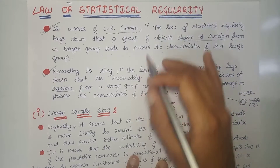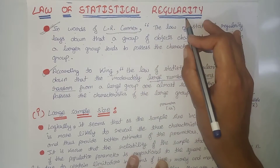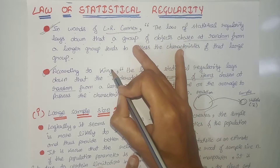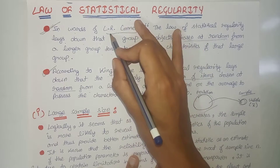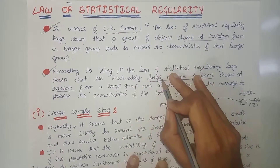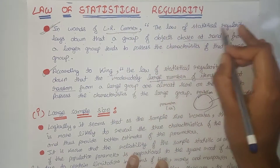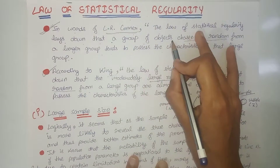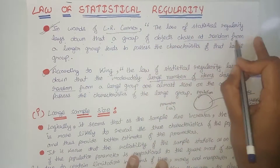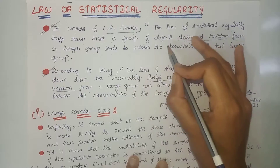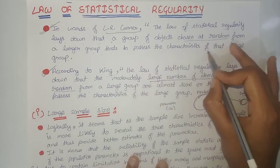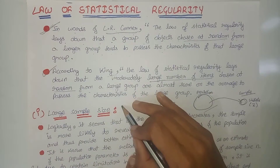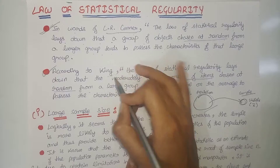In this video we are going to study the Law of Statistical Regularity. Firstly, we will see two main statements. The first statement is of L.R. Conner. He says that the Law of Statistical Regularity lays down that a group of objects chosen at random from a larger group tends to possess the characteristics of that large group.